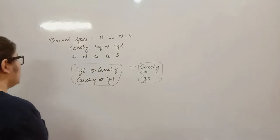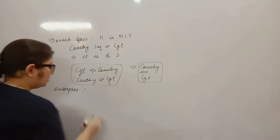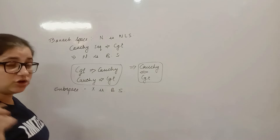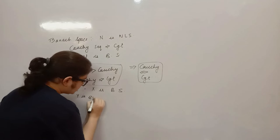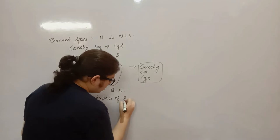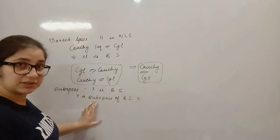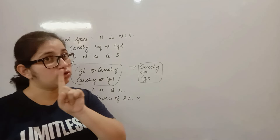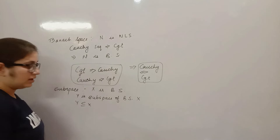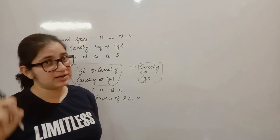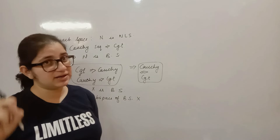Now, what is the subspace? Think about x — if y is a subspace of x, then y will be a normed linear space. Why? Because y is a subspace, and a subspace is a vector space. Every subspace is a vector space under the same binary operations.